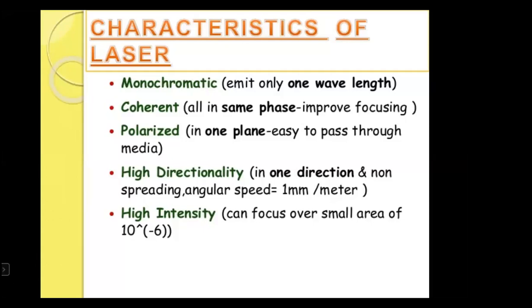So it is a monochromatic beam of light. Coherent means whatever light or whatever photons are coming out, they are all in the same phase. Photon is the basic particle of light. It is the smallest unit of light, which is equal to h times nu, where nu is the frequency and h is Planck's constant. If all photons are in one phase, in one direction, in one wavelength, it improves the focus. So laser has a coherent property.